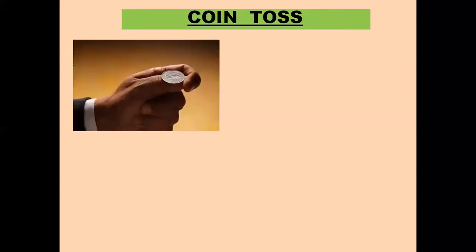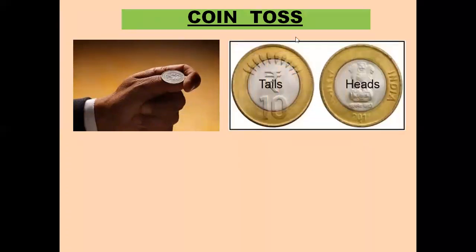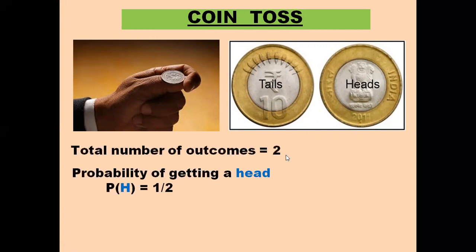Now coming to the coin toss example. When we toss a coin, we know there are two possible outcomes — either head or tail. There are always two possible outcomes: head or tail. Now, probability of getting a head — H is noted as head. So P(H).